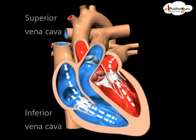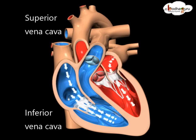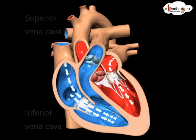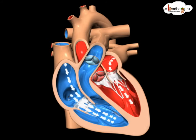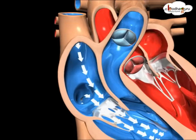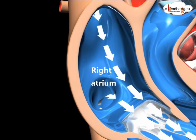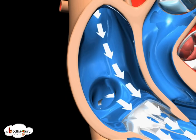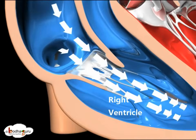Inferior vena cava and superior vena cava carry deoxygenated blood to the right atrium of the heart. Blood flows from the right atrium into the right ventricle through the open tricuspid valve.